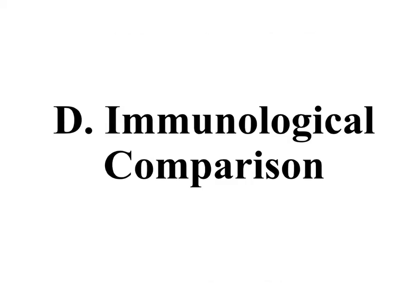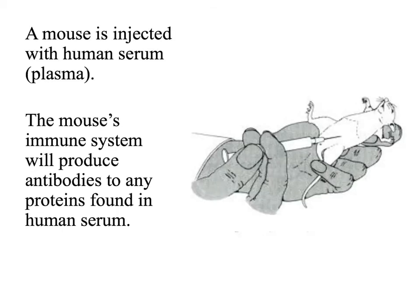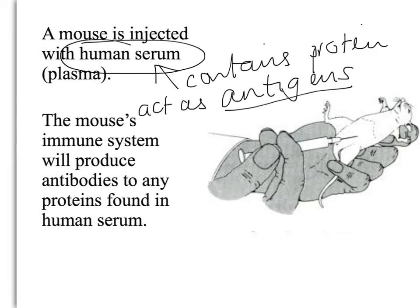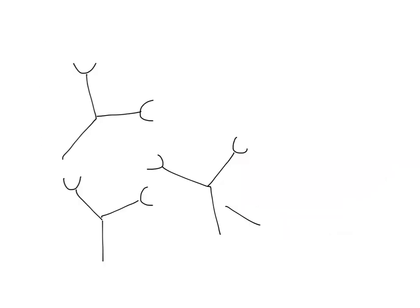The final technique we're going to look at is called immunological comparison. It uses the differences in proteins between species to form a fast way of getting a measure of the degree of relatedness between them. The first stage in this process is to produce antibodies to human proteins. Human serum is the liquid part of the blood and it contains many proteins. This human serum is injected into a mouse, and the proteins in the human serum will act as antigens. Because when they're injected into the mouse, the mouse's immune system will see these proteins as foreign and therefore will produce antibodies to them. We can then harvest these antibodies from the mouse, and these antibodies have an antigen binding site that is specific to human proteins.